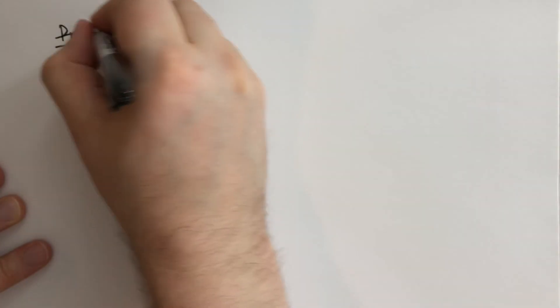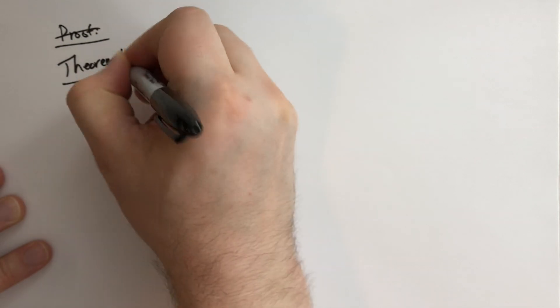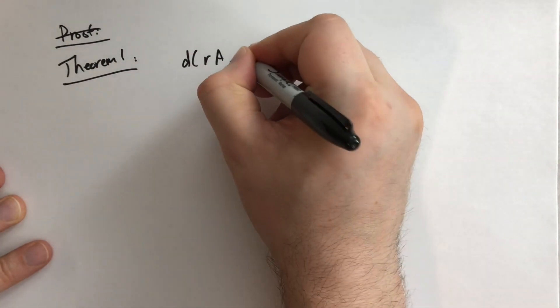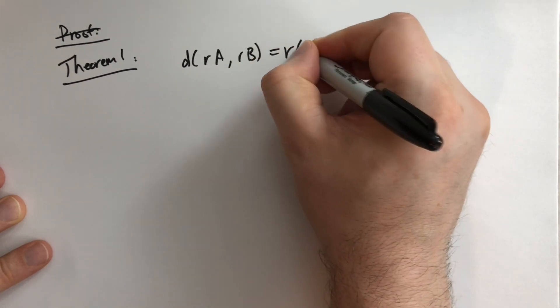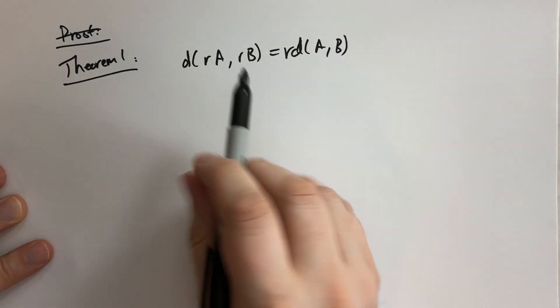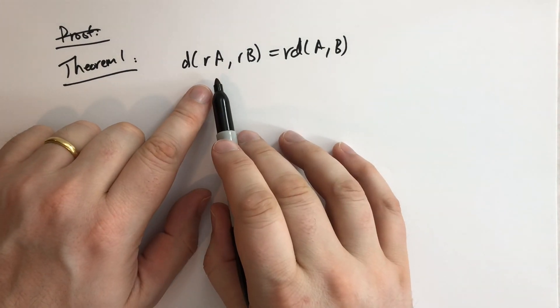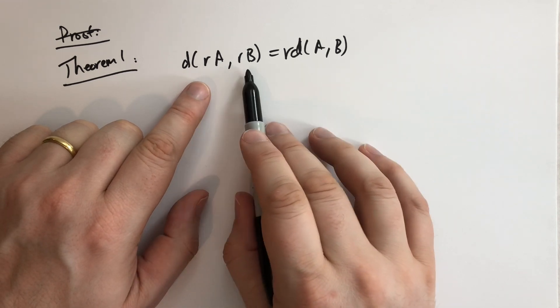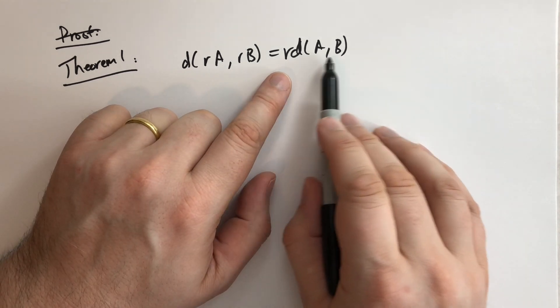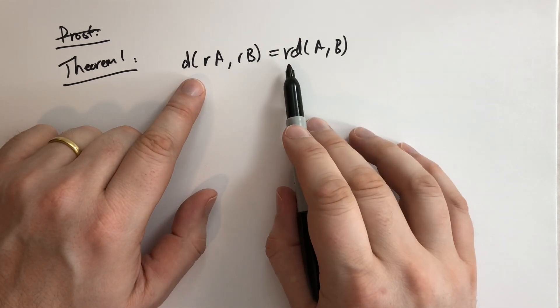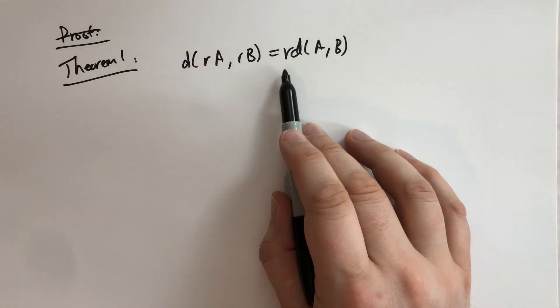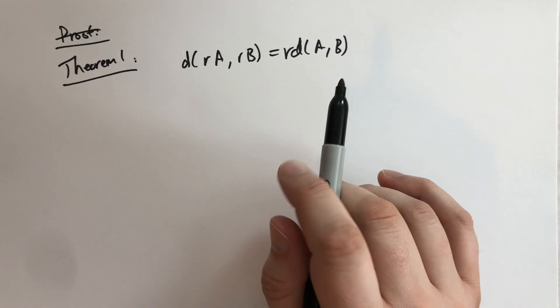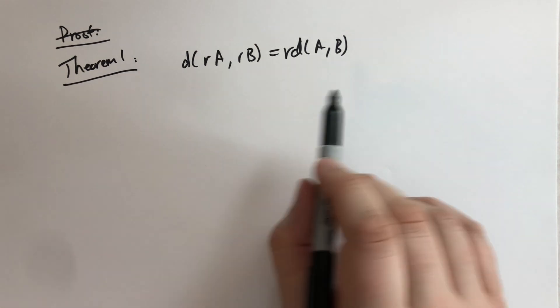We're going to say the distance from RA to RB is equal to R times the distance between A and B. So basically if you take A and B and multiply them by some real number, so you're taking the dilation, the distance between A and B and these new points will be related such that by this factor R that you use to multiply the points. So the proof.